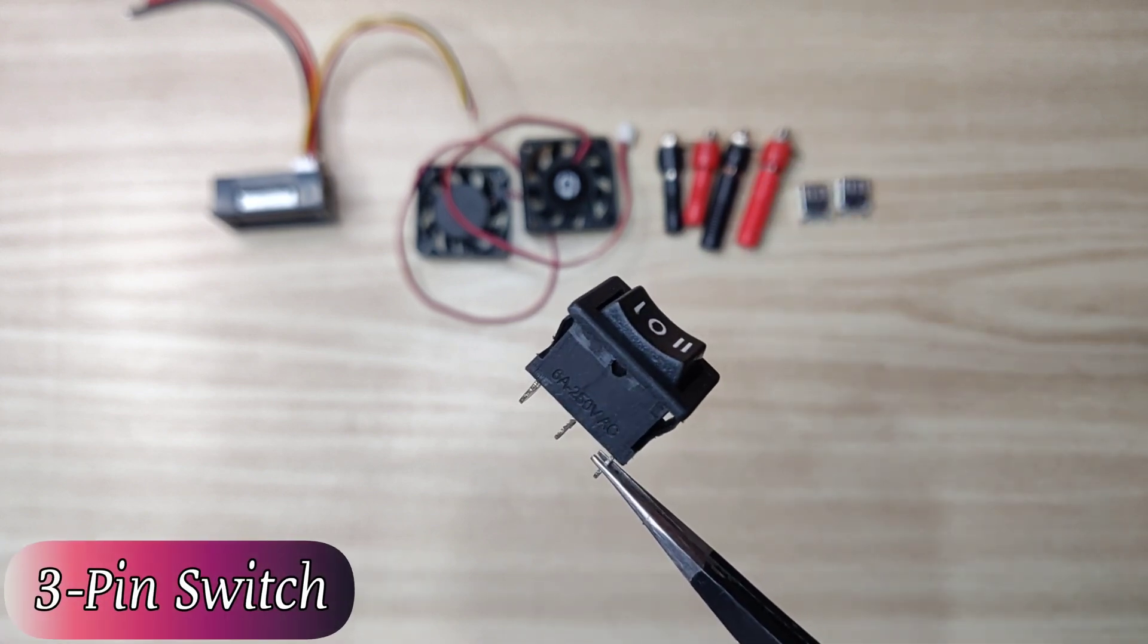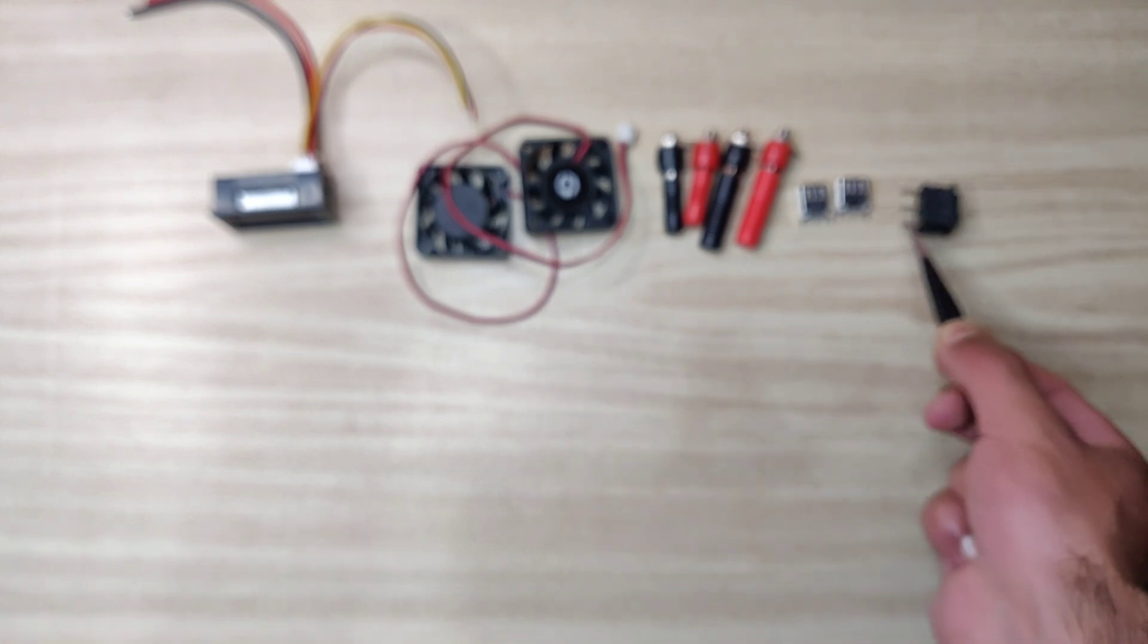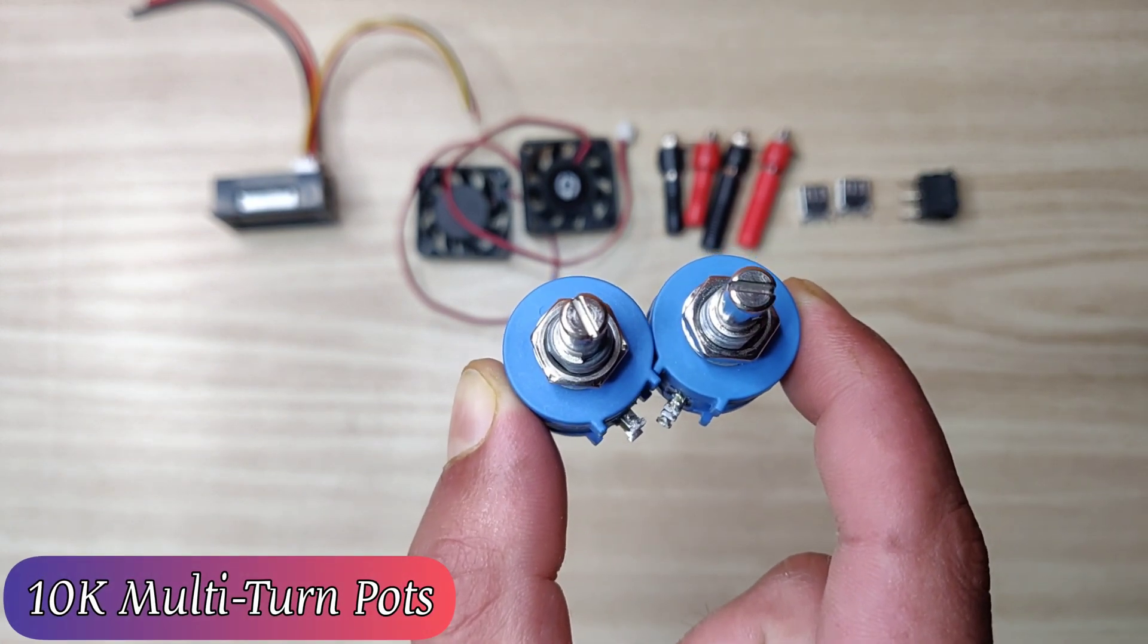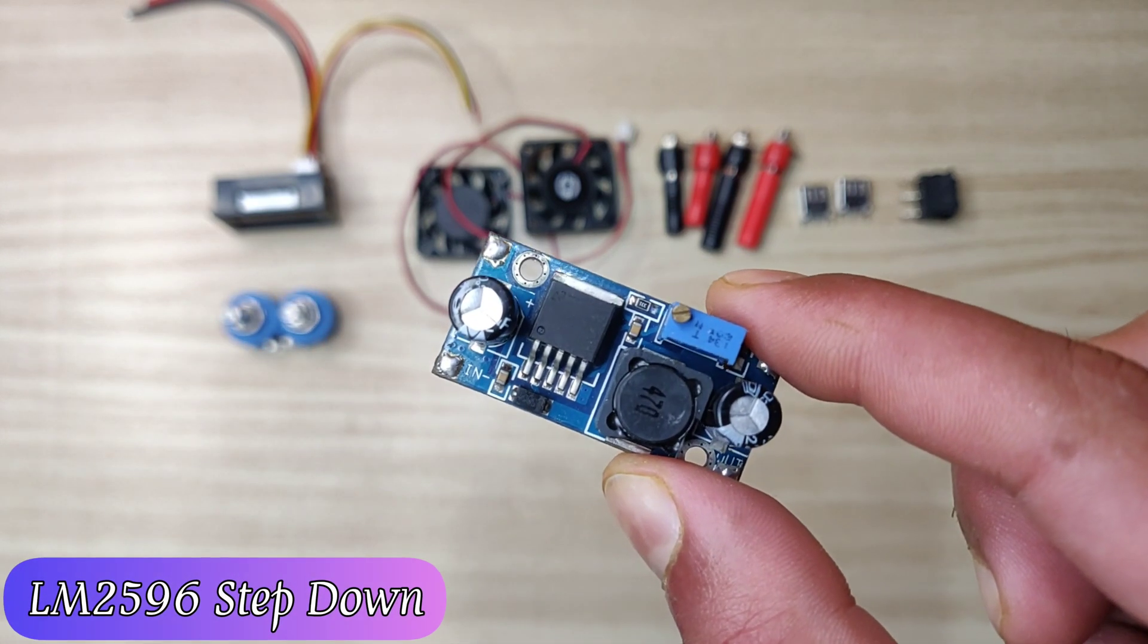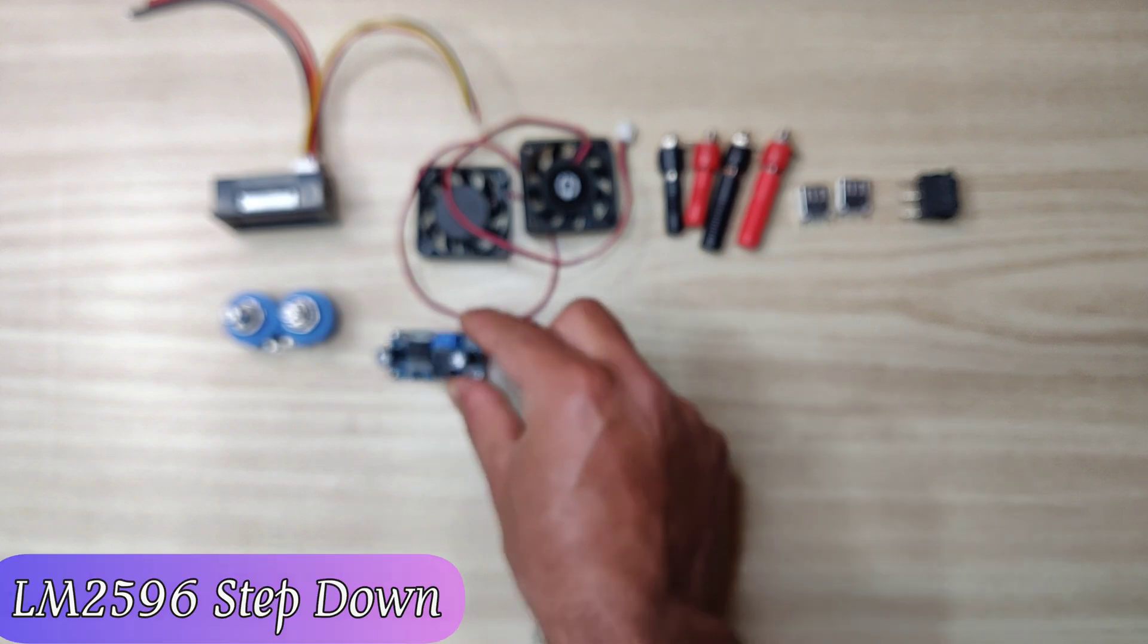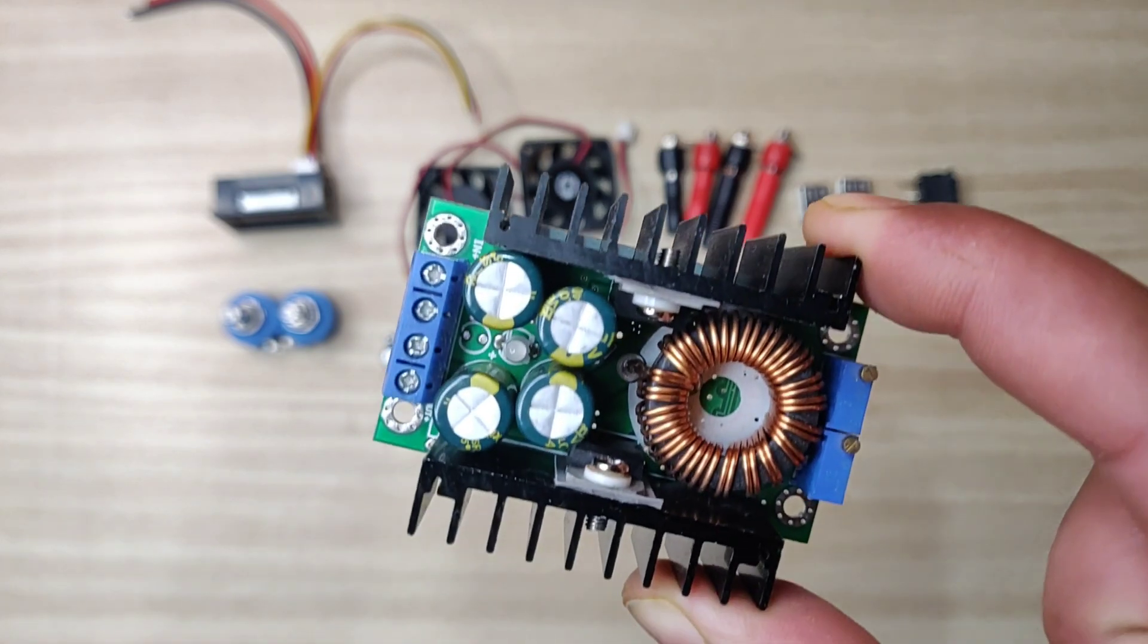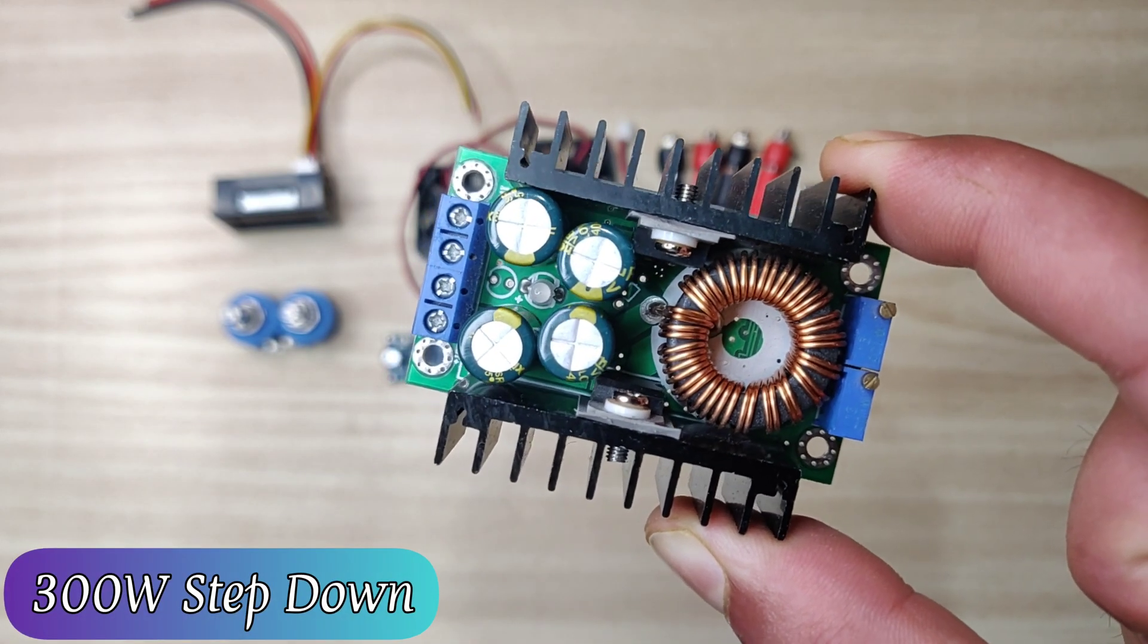You also need a 3-pin mid-off switch, pair of 10K multi-turn potentiometers, LM2596 step down module, and another 300 volt 10 ampere step down module.